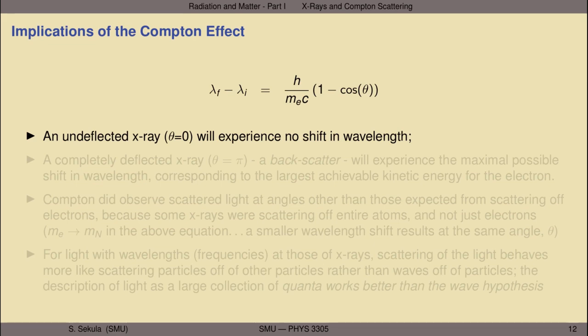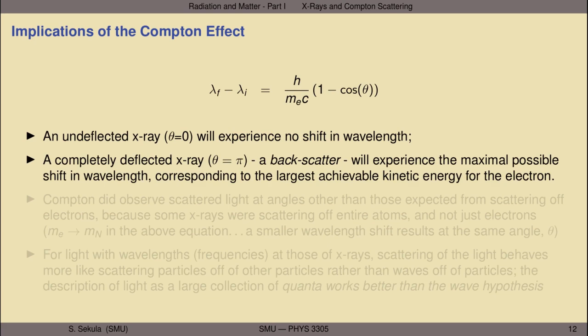There are some implications from the Compton effect. An undeflected x-ray with scattering angle θ = 0 experiences no shift in wavelength — cosine of zero is one, one minus one is zero. More interestingly, a completely deflected x-ray with a scattering angle of 180 degrees, a so-called backscatter, will experience the maximal possible shift in wavelength. This corresponds to the largest achievable kinetic energy for the electron — the most kinetic energy a scattered electron can ever get.